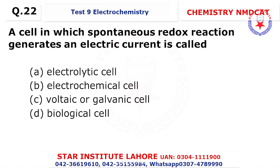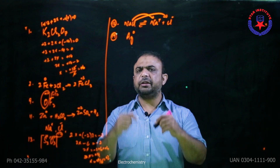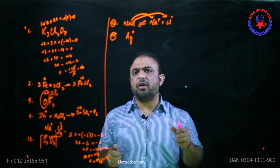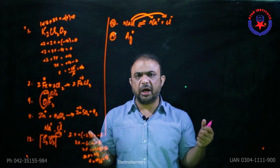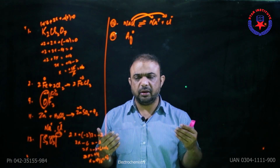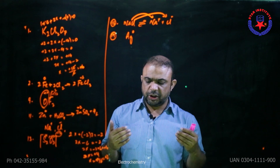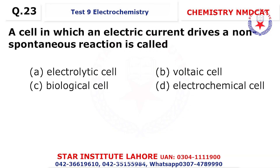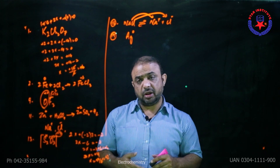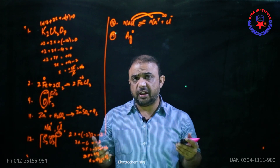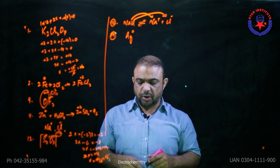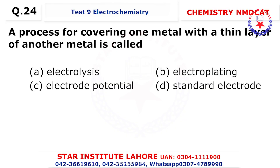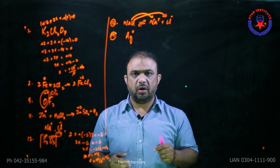Question 22: a cell in which a spontaneous redox reaction generates electricity — whenever electricity is generated, this cell is called a galvanic or voltaic cell. If it consumes electricity, it is an electrolytic cell. Question 23: a cell in which an electrical current drives a non-spontaneous reaction — the cell is electrolytic. Question 24: the process of covering one metal with a thin layer of another metal is called electroplating. If zinc is being electroplated, this phenomenon is called galvanizing.